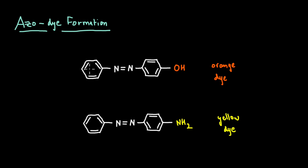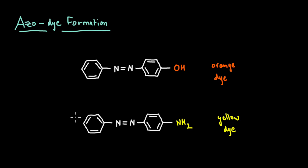We are going to look at azo dyes in this video, like this orange dye here or the yellow dye here. These azo dyes are synthetic organic compounds that form a majority of all the food coloring or the textile coloring that you see used in the industries.